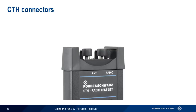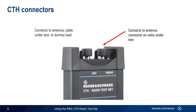There are two BNC connectors on the top of the CTH. The radio connector is used to attach the CTH to the antenna connector of the radio under test. The antenna connector is used to connect to either an external antenna or dummy load, or to a cable when running distance-to-fault or cable length tests. The CTH also has a built-in telescoping antenna for over-the-air measurements.